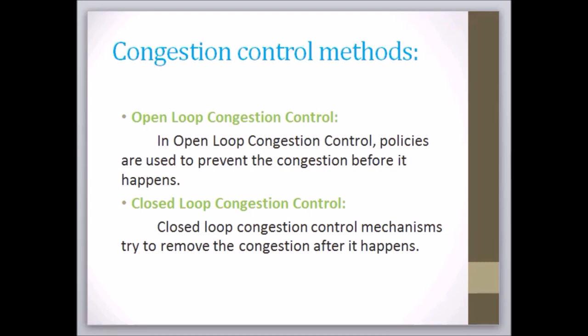That means, who does the control? It can be done by the source or the destination. On the other hand, closed loop congestion control mechanism tries to remove congestion after it happens. It is like some kind of feedback.